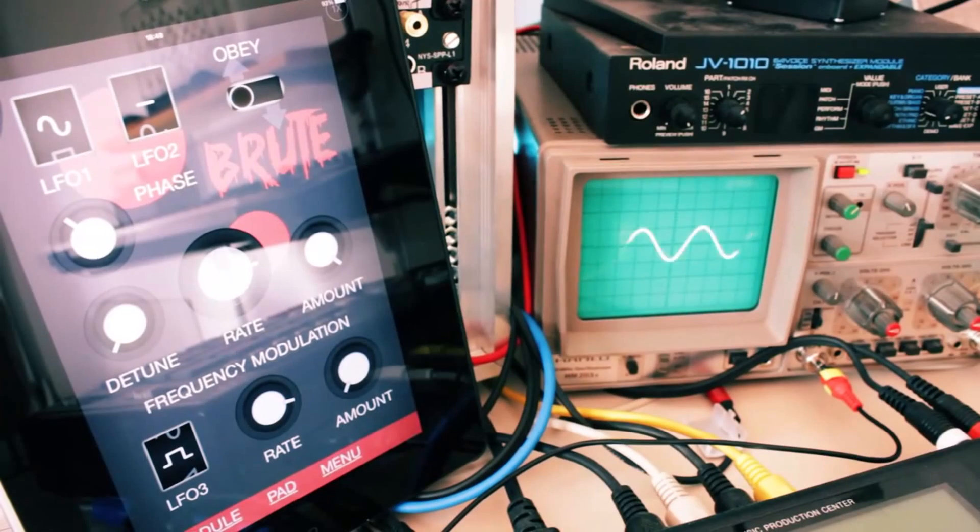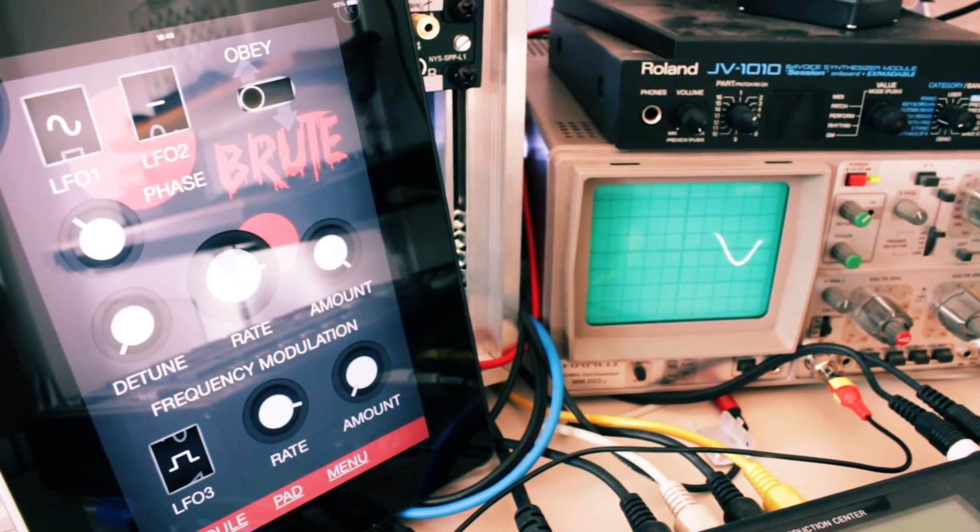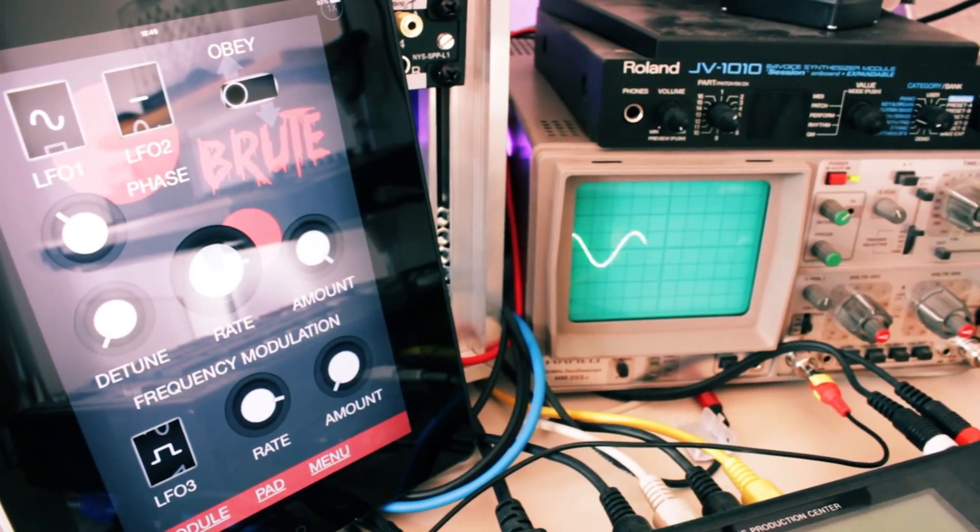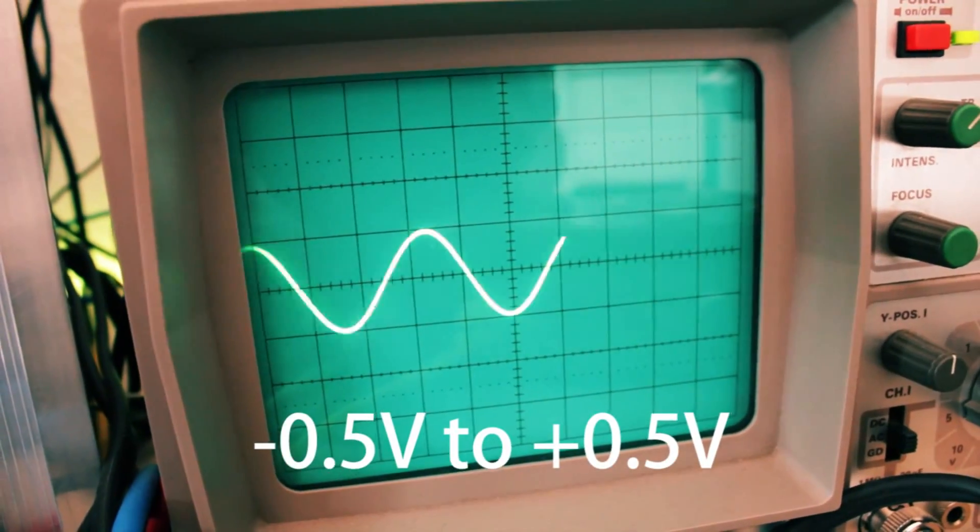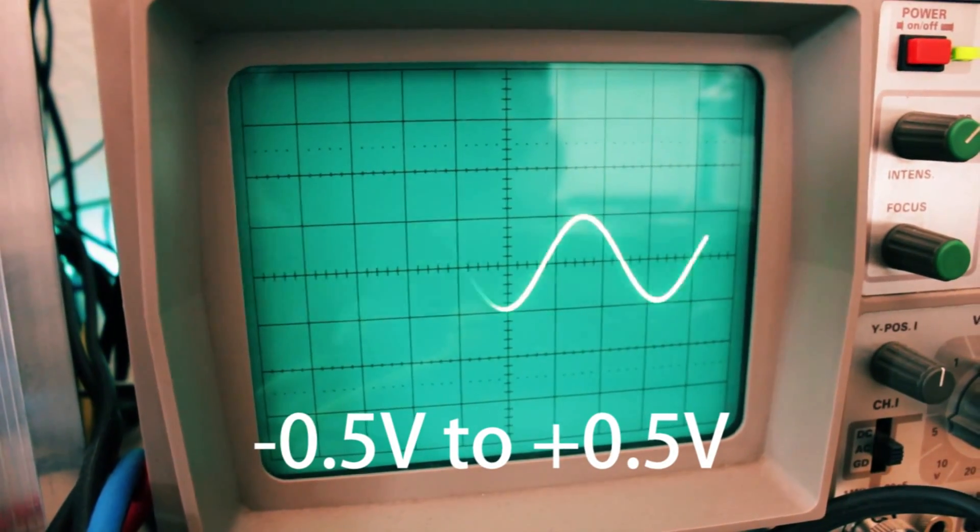Okay, let's have a look at Brute LFO, which is an LFO app. I've got the amount and volume set to maximum again, and on the oscilloscope we can see that the sine wave swings from minus 0.5 volts to plus 0.5 volts. So we have a voltage range of 1 volt.